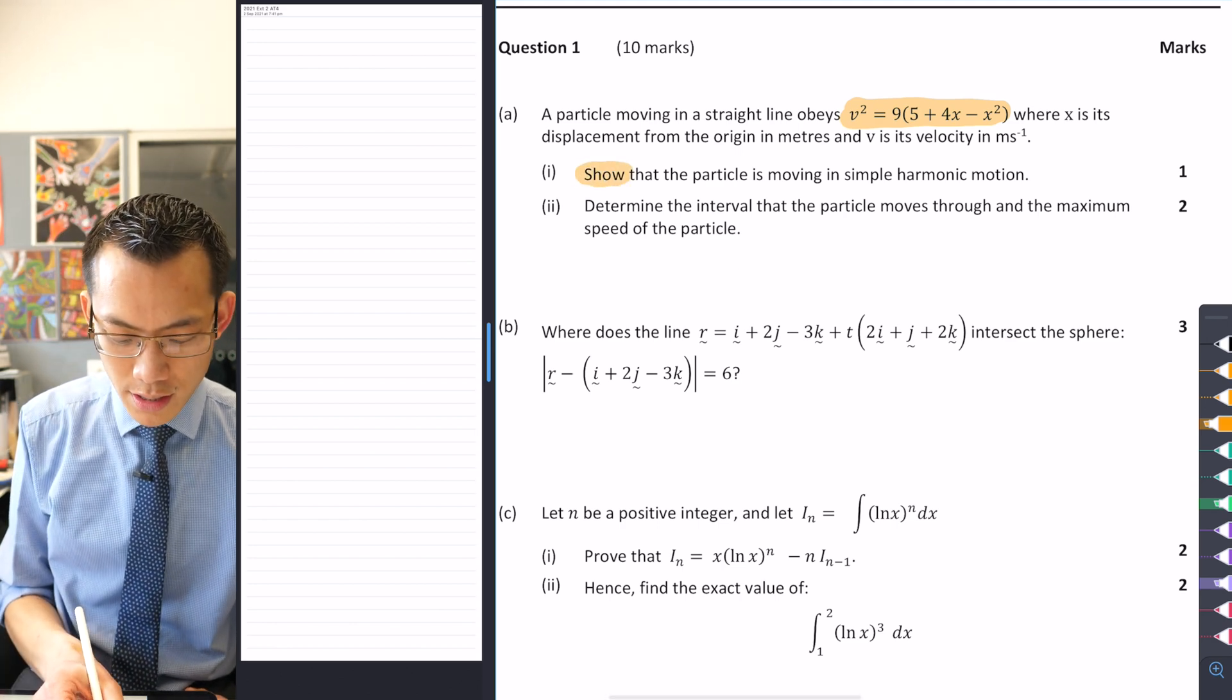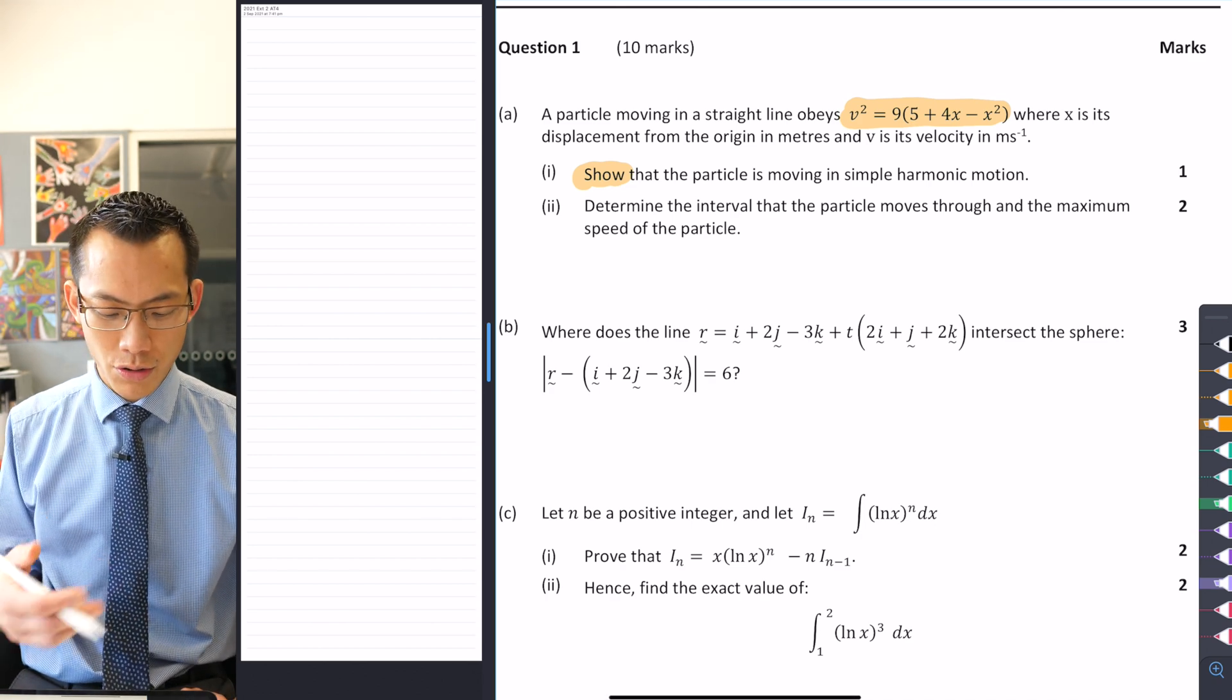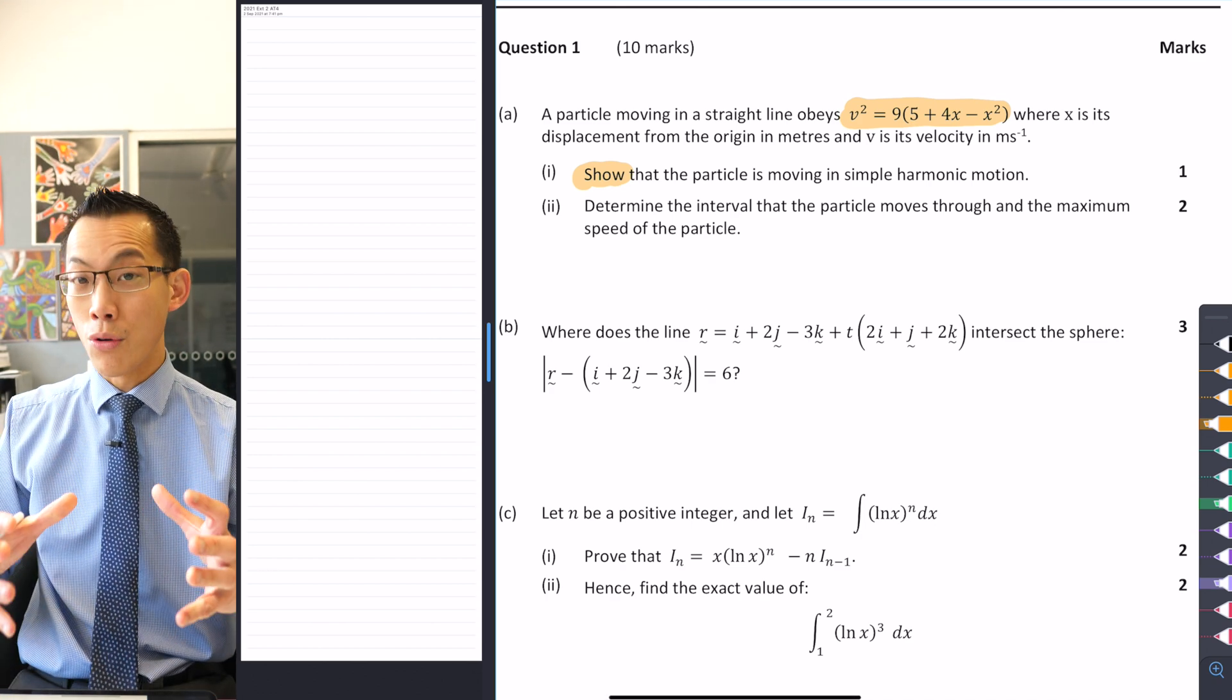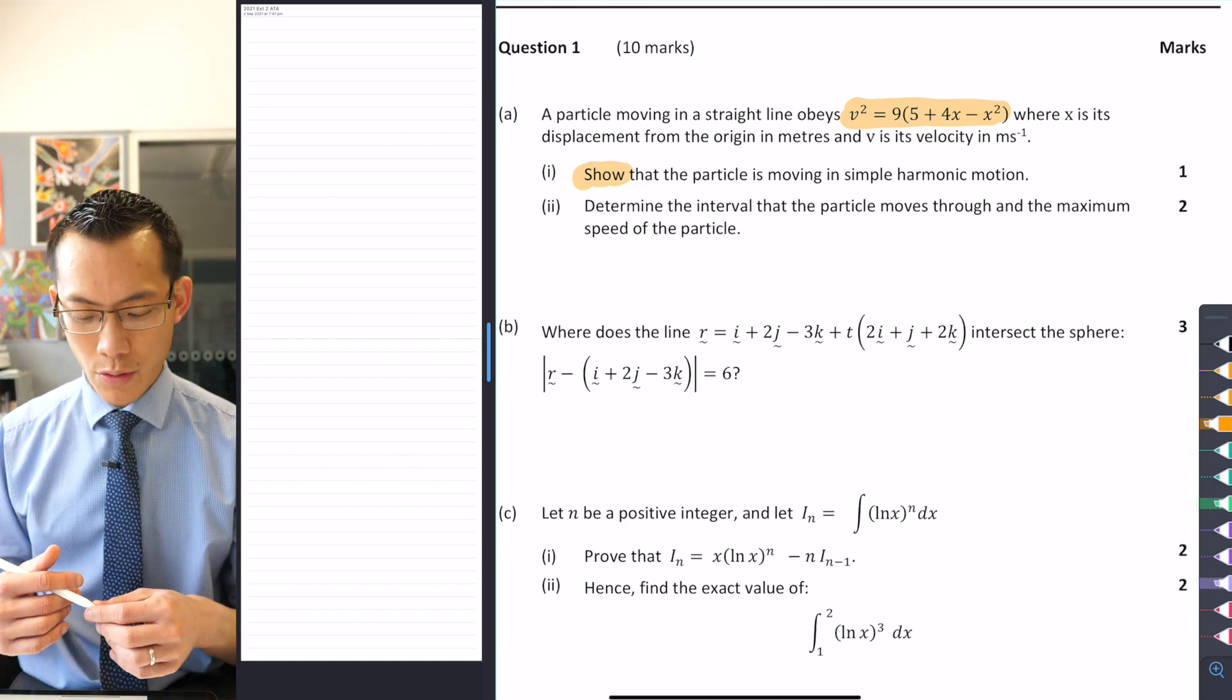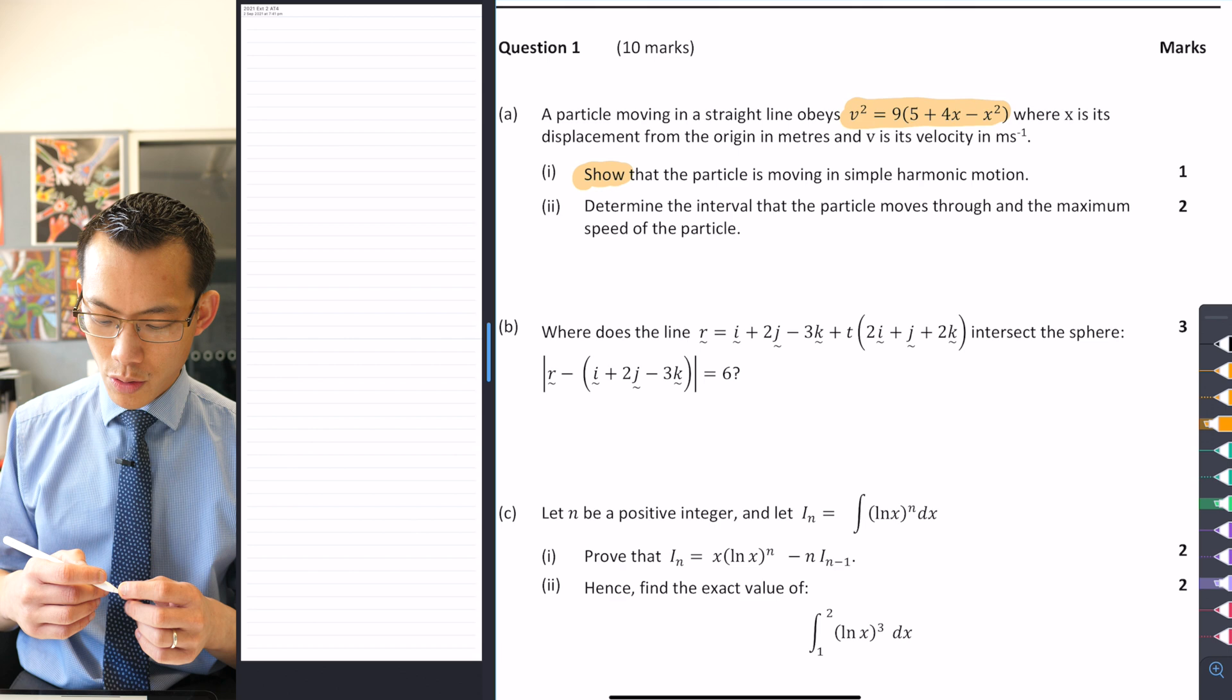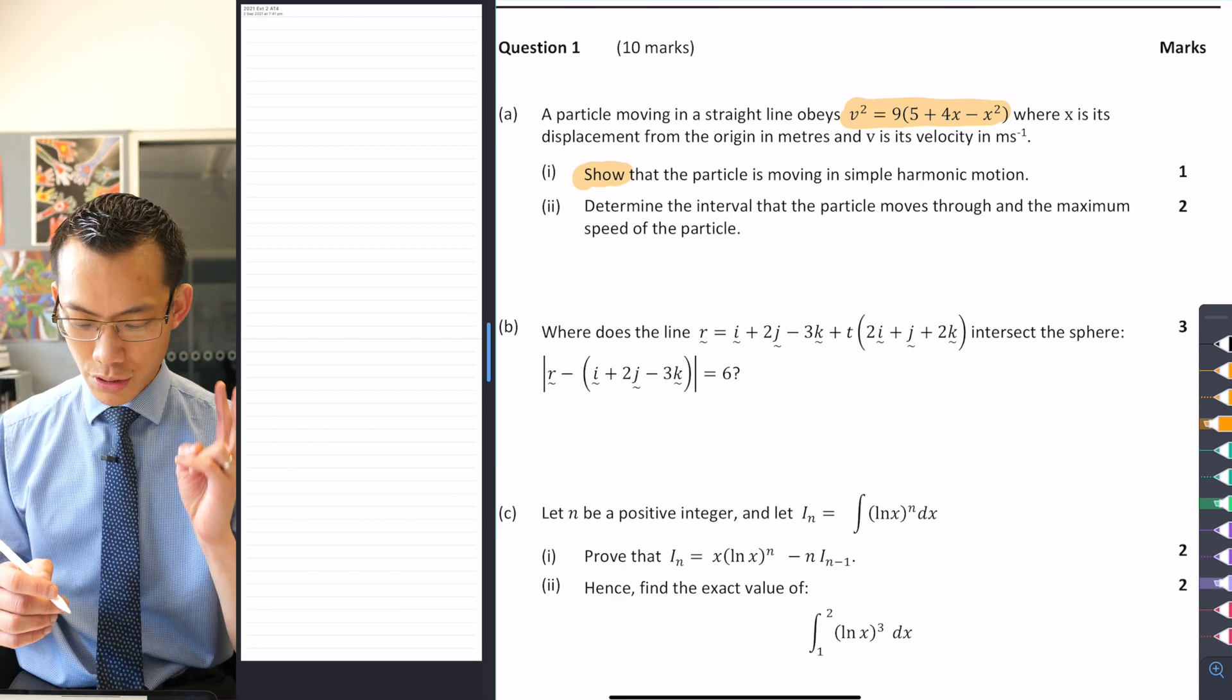What we want to do is first, this is kind of like a proof question, right? So we're not trying to find a result in part one, we're just trying to show that this is actually simple harmonic motion, this v squared equation that we've got here. And then also we are looking for in part two, two separate things.